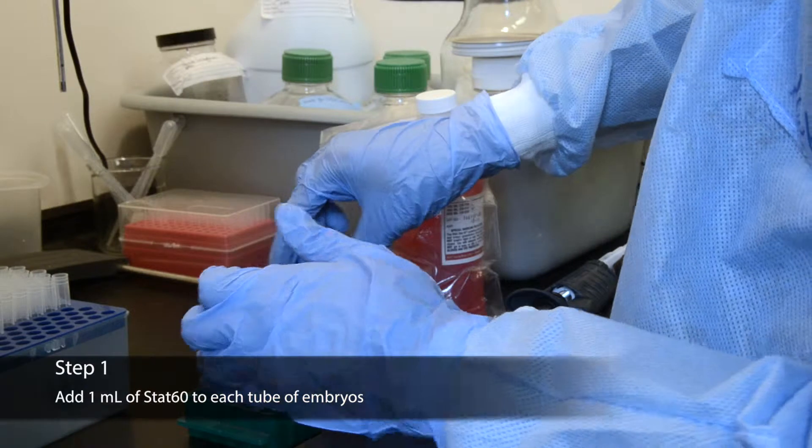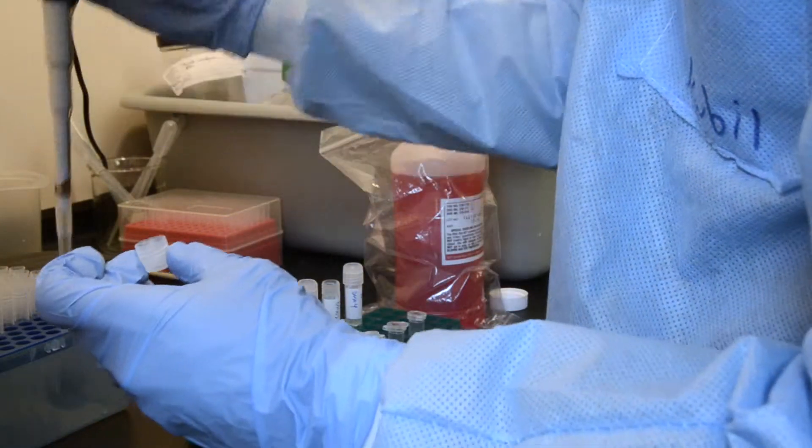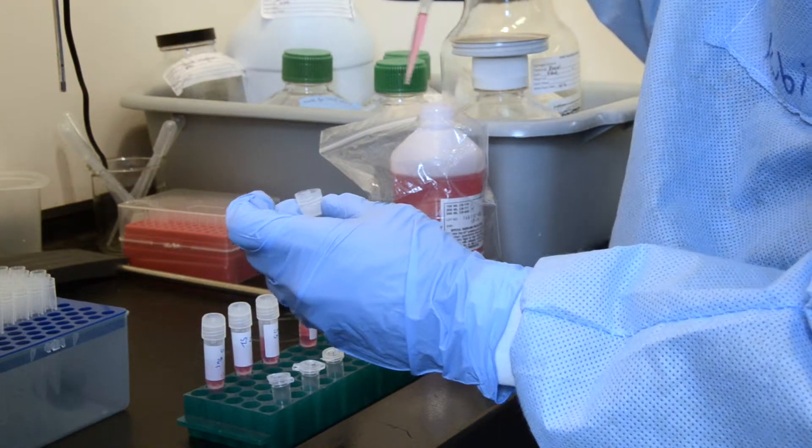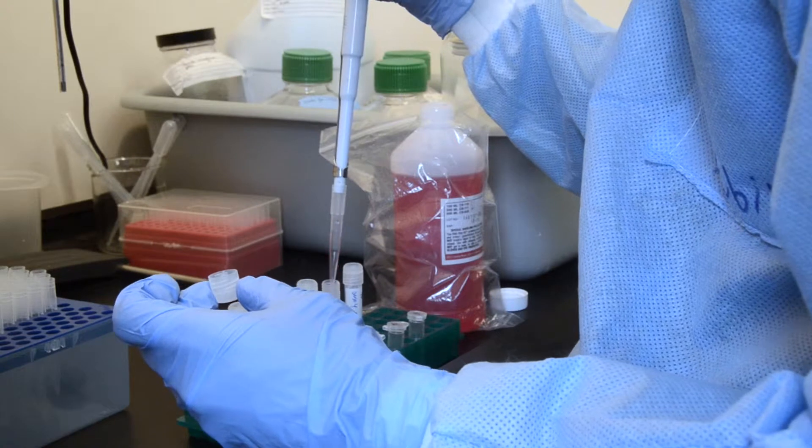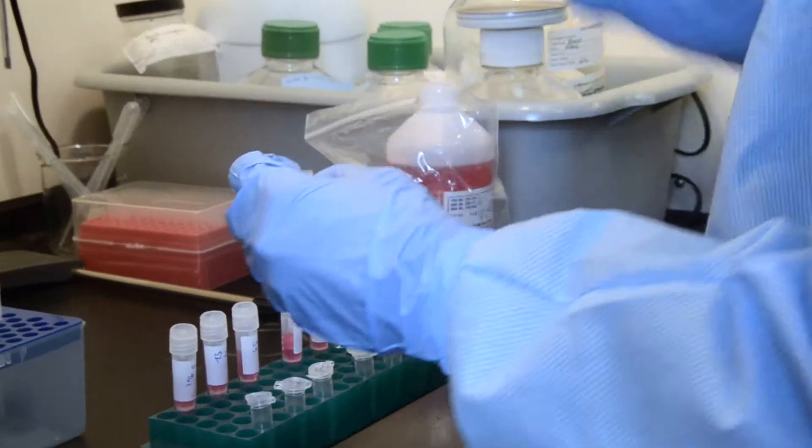In the initial step of the RNA isolation protocol, embryos are homogenized in STAT60. One milliliter of STAT60 should be added into each tube of embryos. The RNA STAT60 contains phenol. It can be fatal. When handling the RNA STAT60, always wear gloves and a lab coat and operate in the hood.